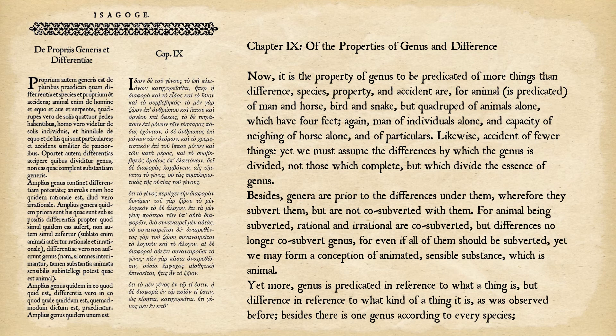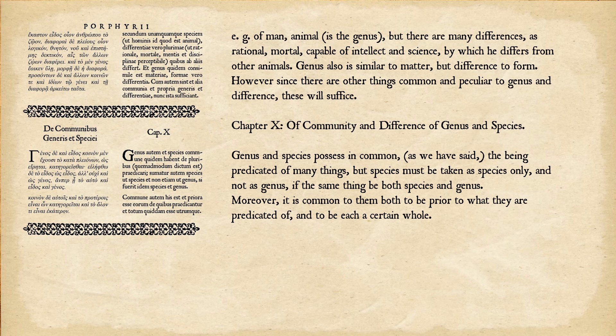Genus is predicated in reference to what a thing is, but difference in reference to what kind of a thing it is. Besides, there is one genus according to every species — as of man, animal is the genus — but there are many differences, as rational, mortal, capable of intellect and science, by which he differs from other animals. Genus is also similar to matter, but difference to form.